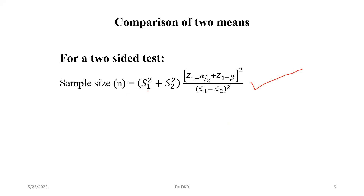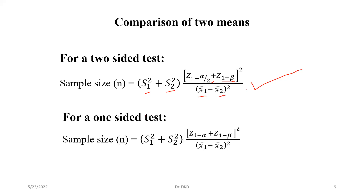The sample size formula uses s1 squared (standard deviation of group 1), s2 squared (standard deviation of group 2), z1 minus alpha by 2, and z1 minus beta (the power of the test) — the whole sum squared — divided by the quantity (x1 bar minus x2 bar) squared. This is for a two-sided test. For a one-sided test, we use the same formula with s1 squared plus s2 squared, but replace z1 minus alpha by 2 with z1 minus alpha.